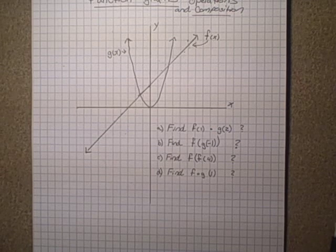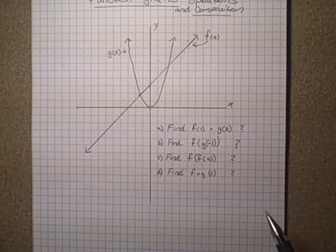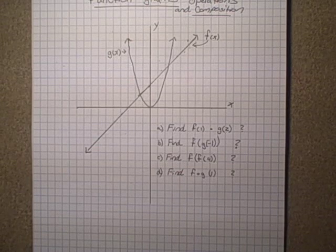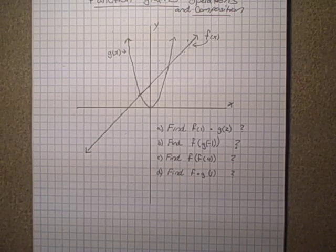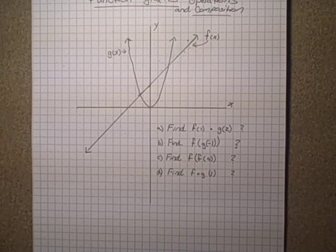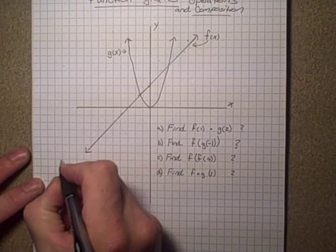First of all, in part a it says find f(1) multiplied by g(2). So you have to find the value of each of these functions by looking at the graph and then multiply them together.